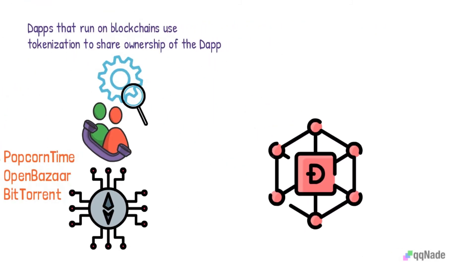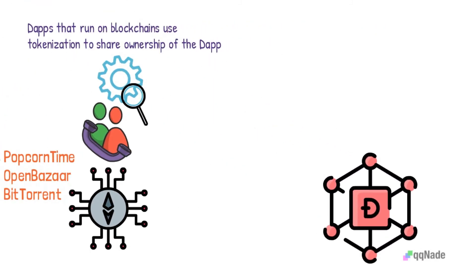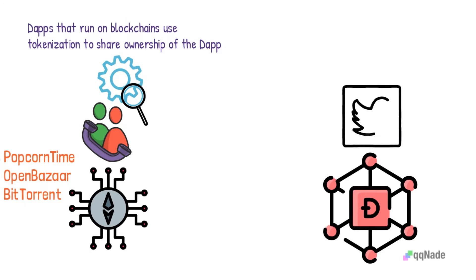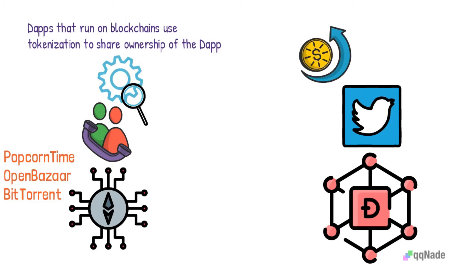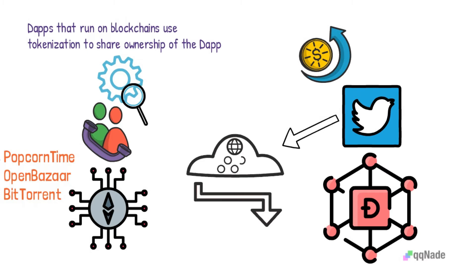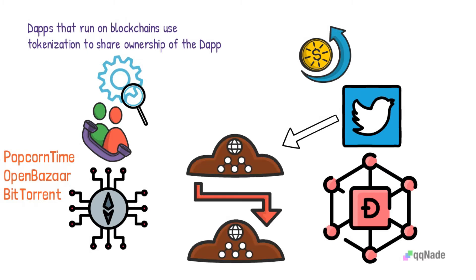For example, if Twitter was built on a blockchain, no one individual would be able to delete another person's tweets. The owners of Twitter would be its token holders. They would be able to vote on how Twitter should function. The more tokens a person holds, the higher their voting power.